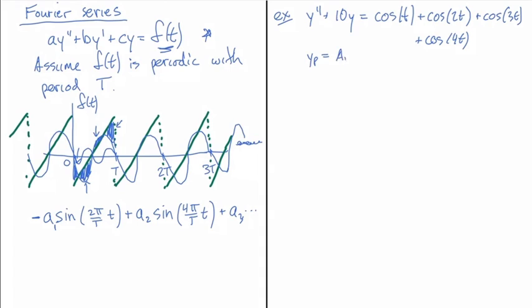But I'm going to have here an a1 cosine t plus a2 times cosine of 2t plus a3 cosine of 3t plus a4 cosine of 4t.